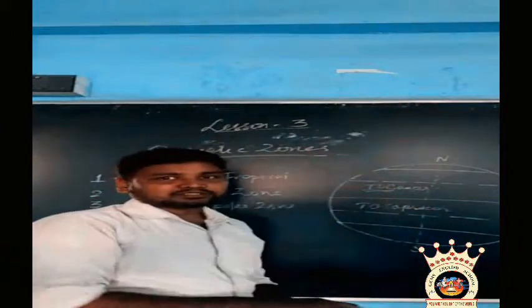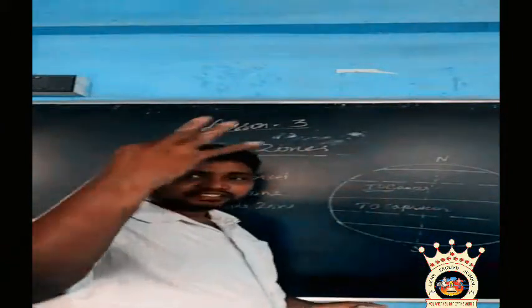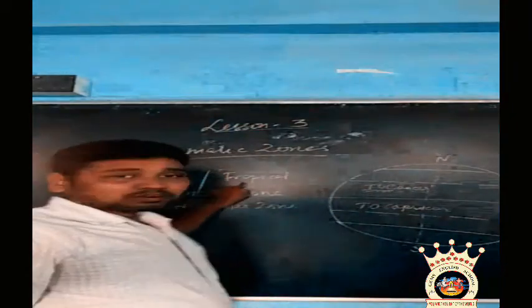Now we will see climatic zones again. There are three climatic zones: torrid zone or tropical zone is the first one, temperate zone is the second one, and frigid zone is the third one.